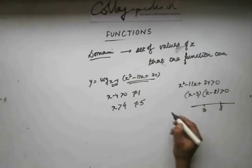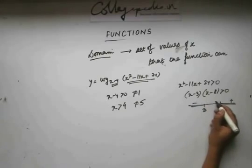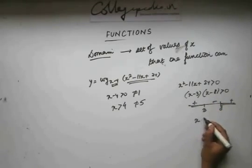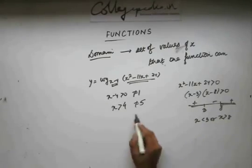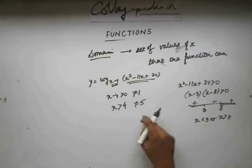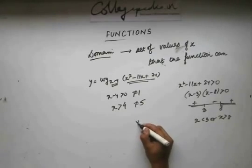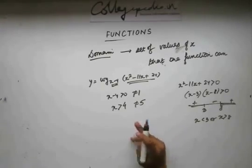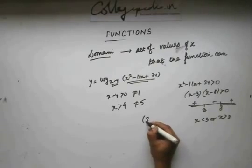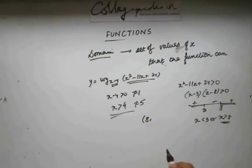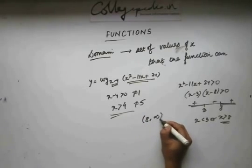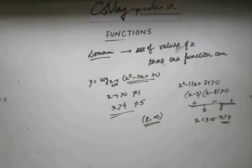If x minus 4 is greater than 0, I get x greater than 4 and not equal to 5. From the quadratic condition, if I factorize it, I take help of the number line. The positive regions give x less than 3 or x greater than 8. Combined with x greater than 4, the union gives the domain as x greater than 8, since greater than 8 also satisfies greater than 4. So the domain is from 8 to infinity.